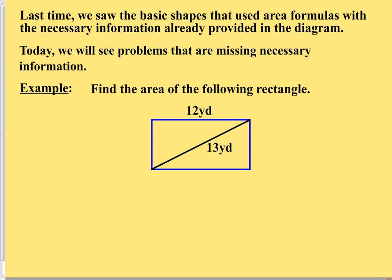Here's an example. Find the area of the following rectangle. Copy down the diagram. The first step is to identify the kind of shape you have — obviously, this is a rectangle. The formula for the area of a rectangle: a rectangle is a type of parallelogram, and the formula for a parallelogram is base times height. So let's look into the diagram and see if we have the necessary information for base and height, which are perpendicular to each other.